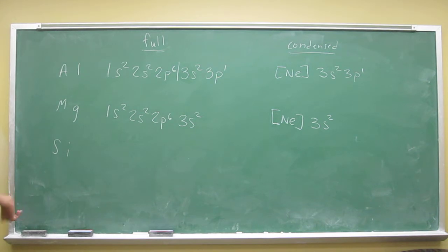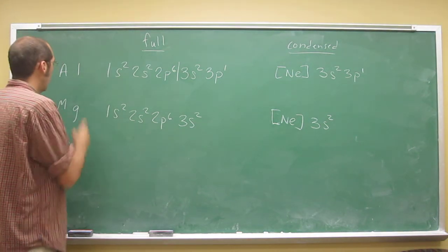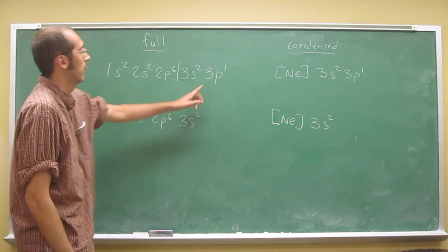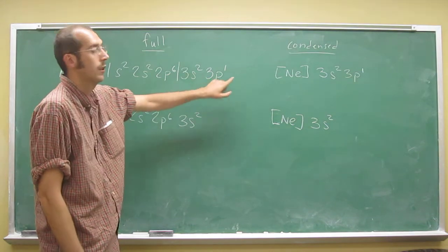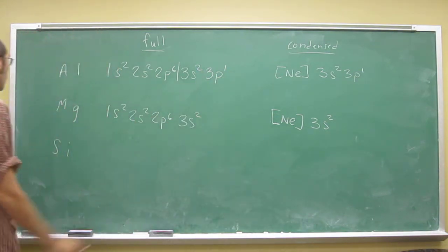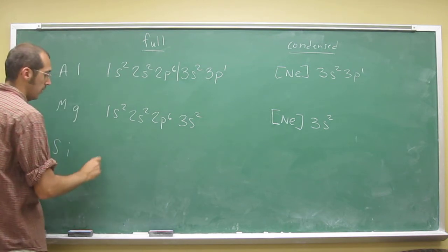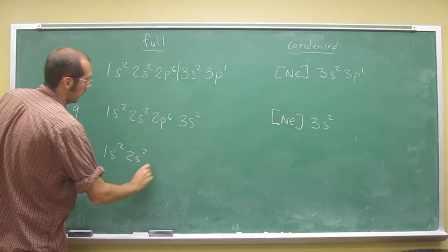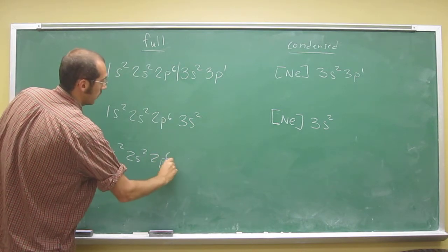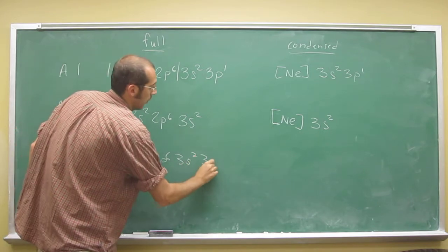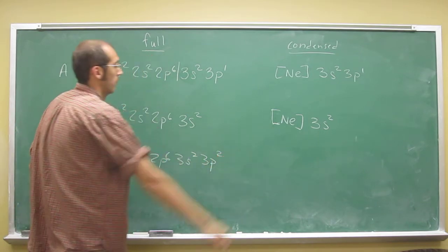And then silicon, well it's the next one above aluminum. So you would just add one, because remember the 3p orbitals, it's actually three orbitals, right? So they can each hold two electrons. So 1s2, 2s2, 2p6, 3s2, 3p2.